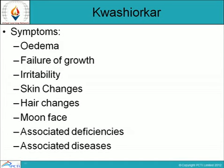Failure of growth is an early sign in Kwashiorkor. The body weight is very low, and children lose about 60% of their normal weight. For example, a healthy 3-year-old child should weigh about 13.5 kg, but a child with Kwashiorkor may weigh only about 6.5 kg.